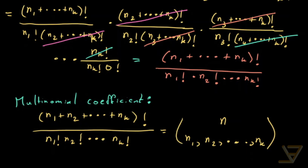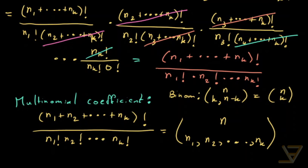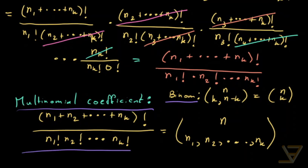As you can see, this is a generalization of the binomial coefficient, because the binomial coefficient is the case k equals 2. We get n choose (k, n minus k), which is just n choose k. So the multinomial coefficient generalizes the binomial coefficient. Thanks for watching, and I'll see you next time.